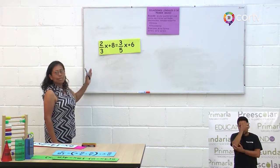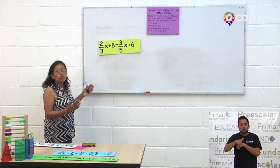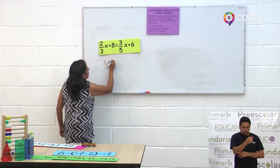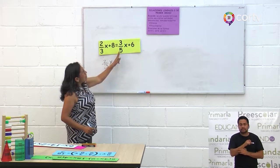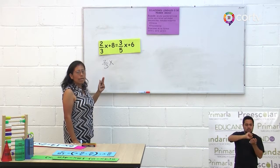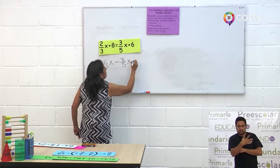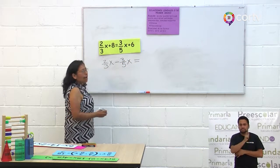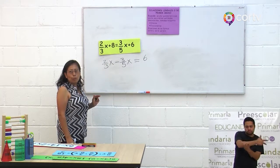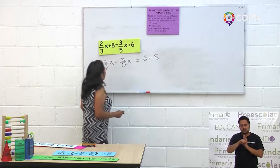En el primer miembro vamos a colocar las fracciones con su incógnita, y en el segundo miembro los términos independientes. Queda: 2 tercios de X menos 3 quintos de X igual a 6. El 8 está en el primer miembro y pasa al segundo miembro con signo negativo, menos 8.